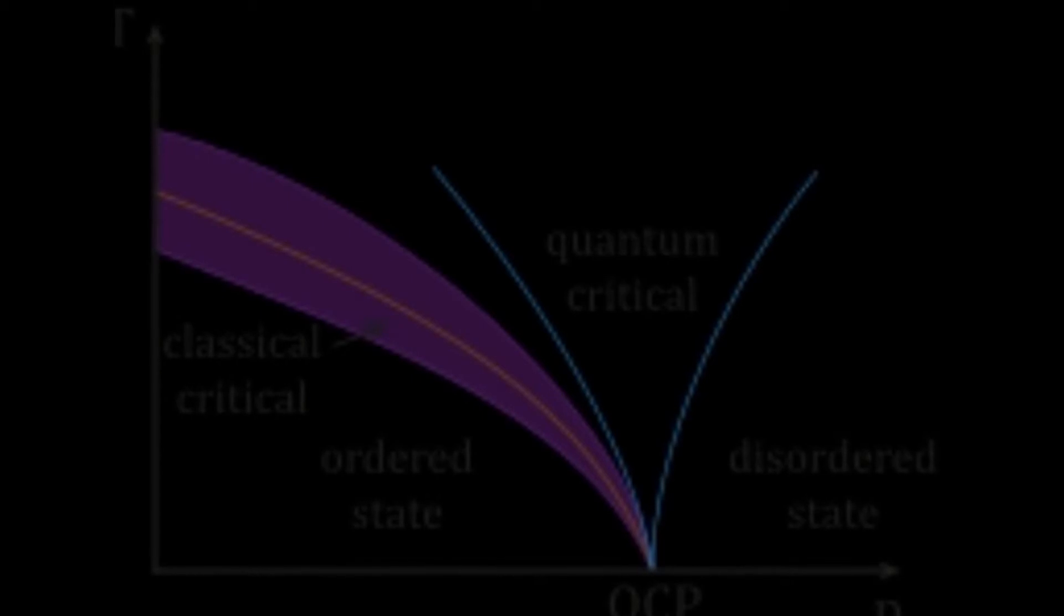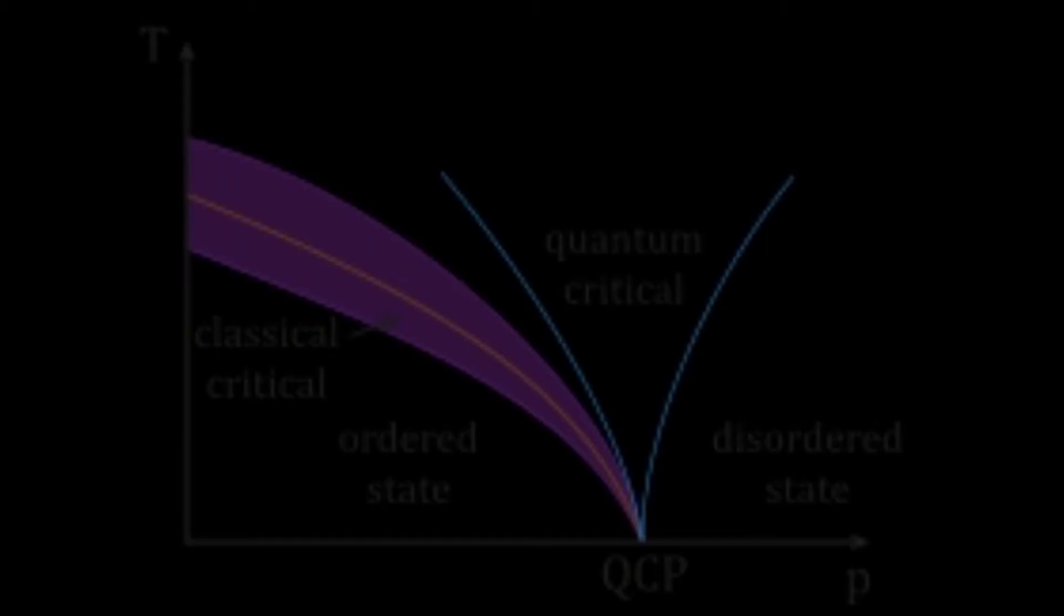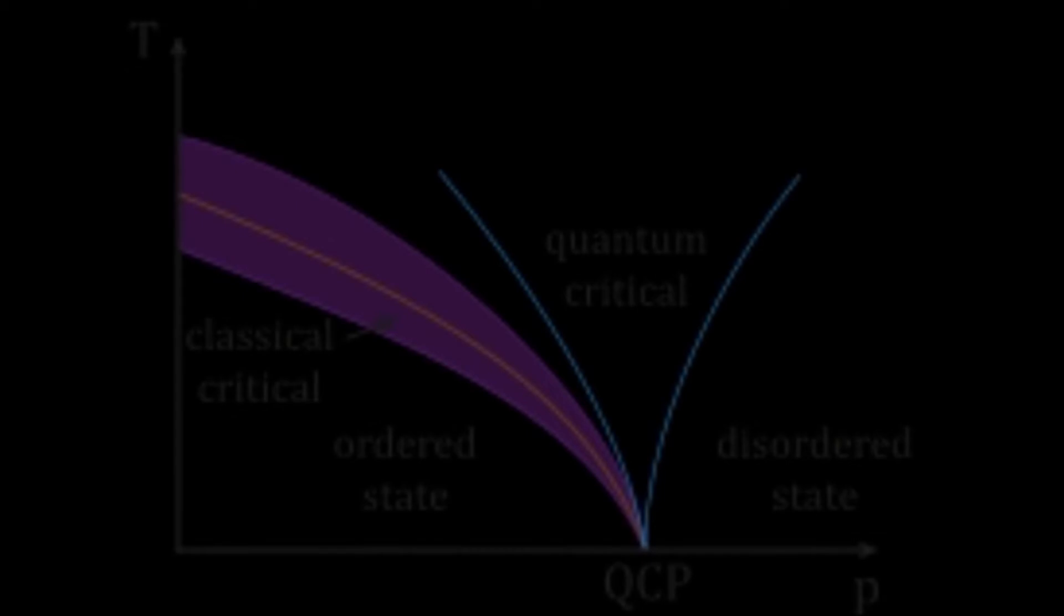Before the development of X-ray diffraction crystallography, the study of crystals was based on physical measurements of their geometry. This involved measuring the angles of crystal faces relative to each other and to theoretical reference axes and establishing the symmetry of the crystal in question. This physical measurement is carried out using a goniometer.